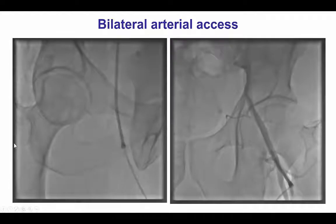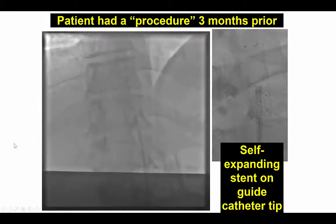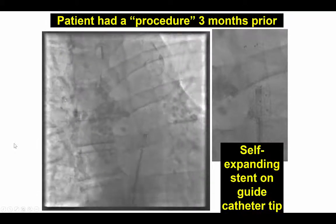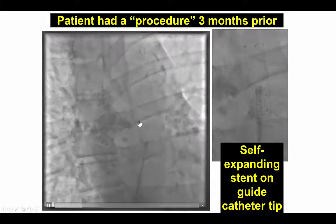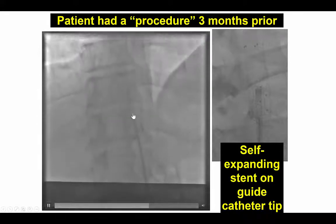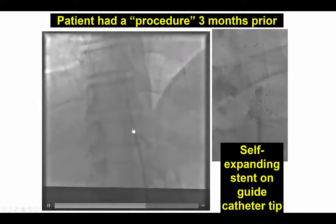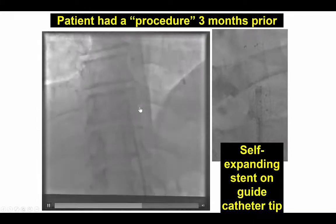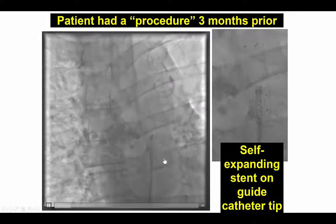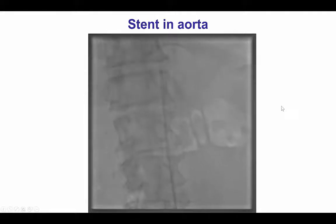We did imaging on both groins — no significant disease. There was some resistance felt while advancing the left guiding catheter, and the next thing we knew is that a large peripheral self-expanding stent was located at the tip of the guide catheter, all the way in the aortic arch. The guide catheter was withdrawn into the abdominal aorta, and eventually the self-expanding stent became dislodged from the guide catheter and embolized distally in the abdominal aorta. We therefore had a challenge with a large self-expanding stent located in the abdominal aorta.